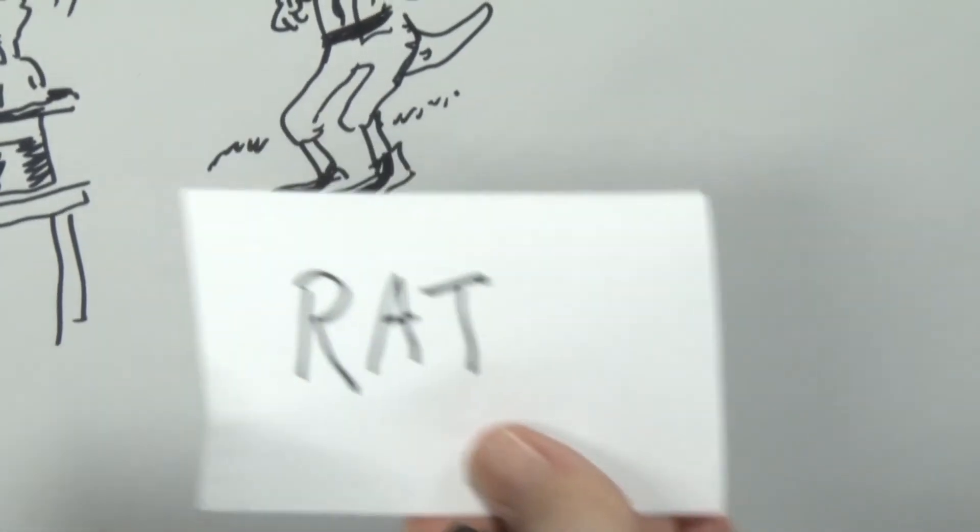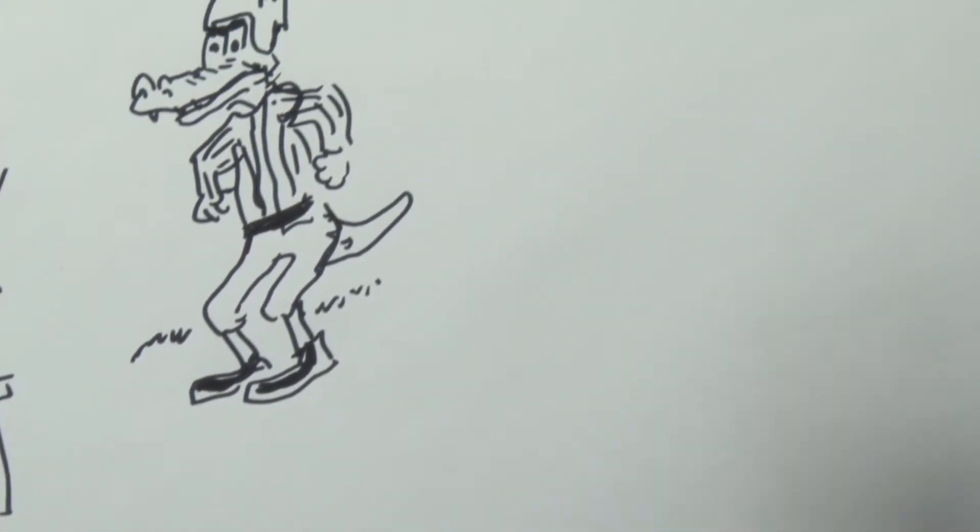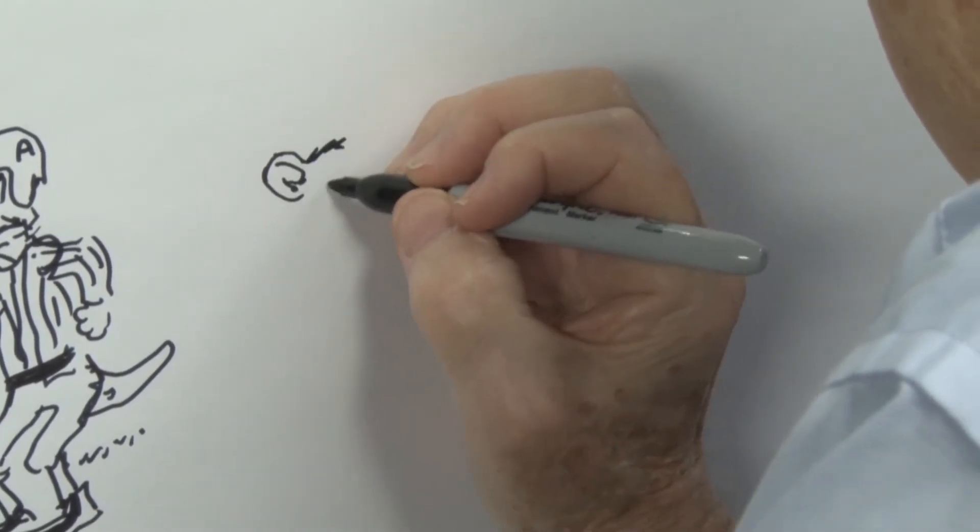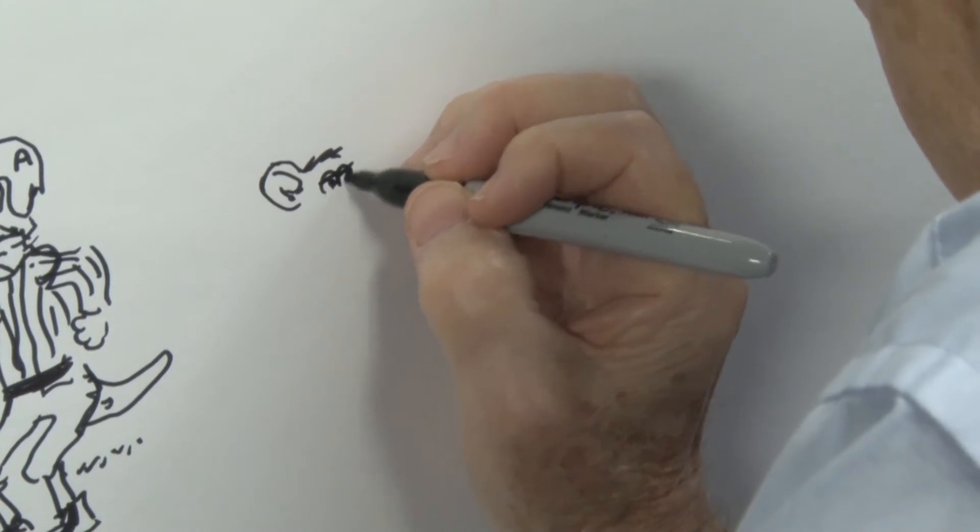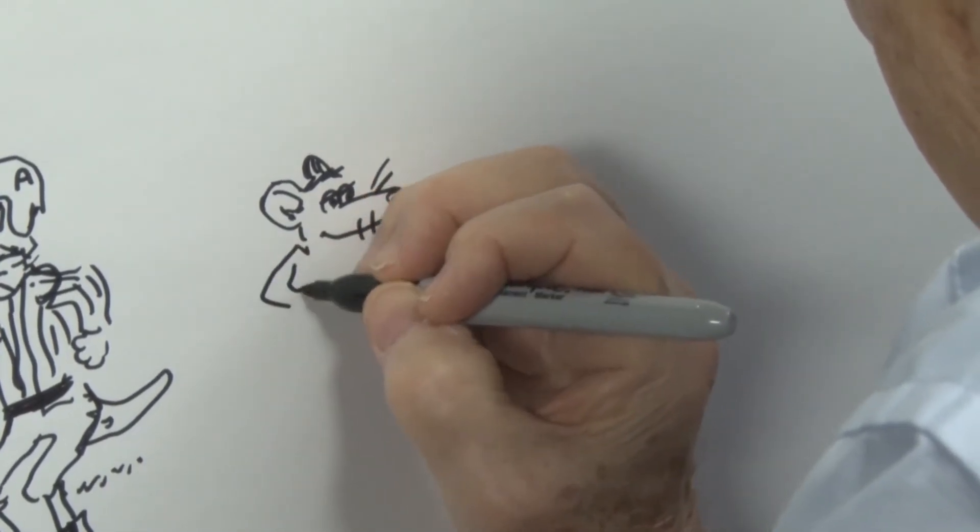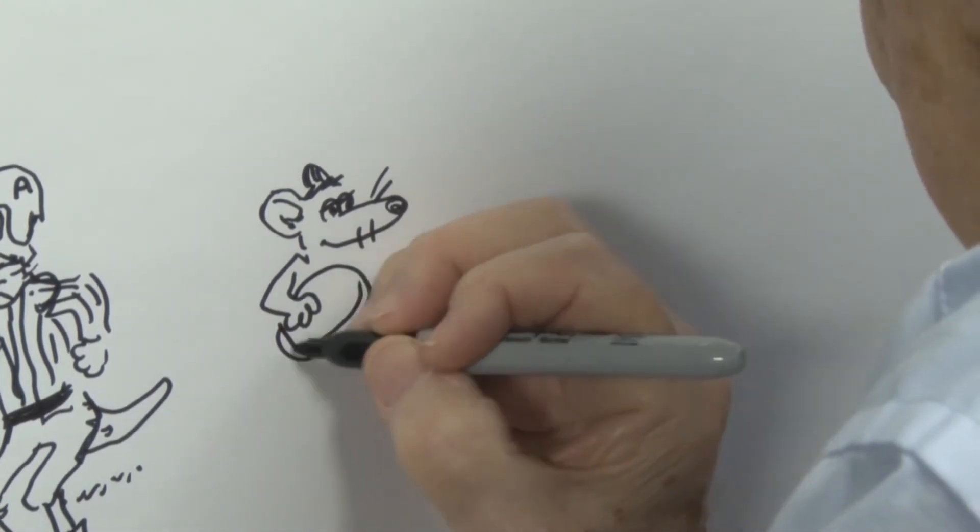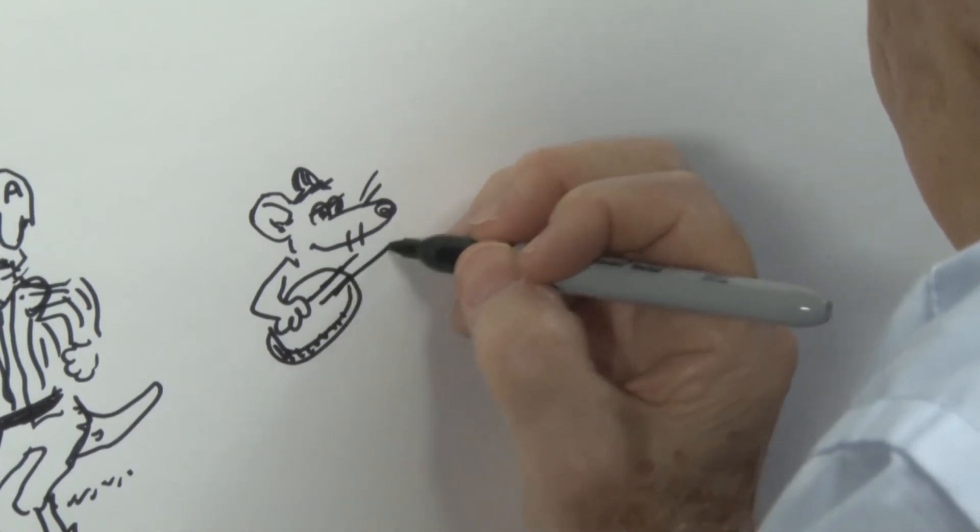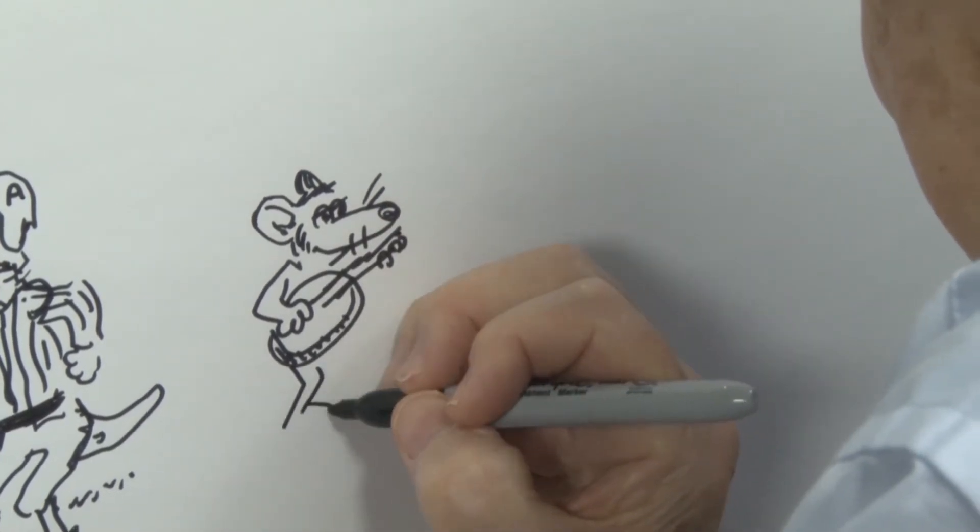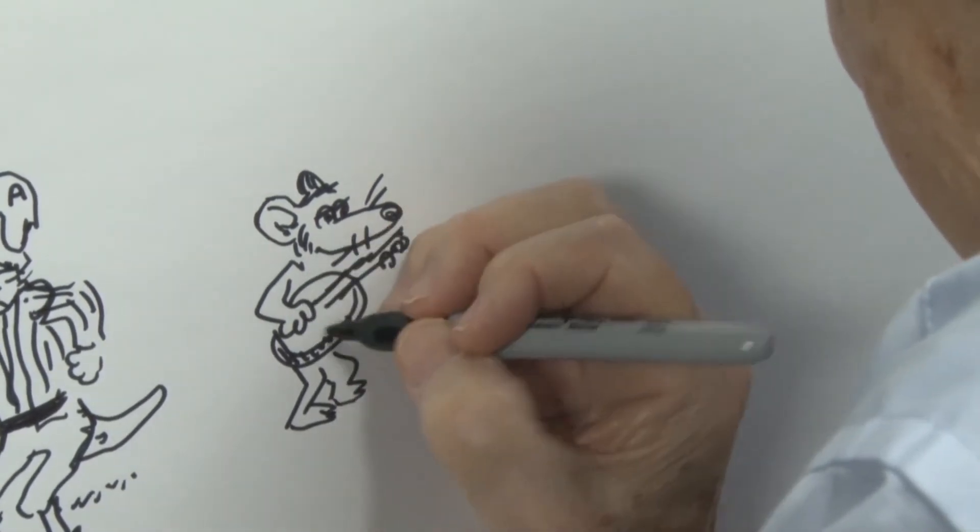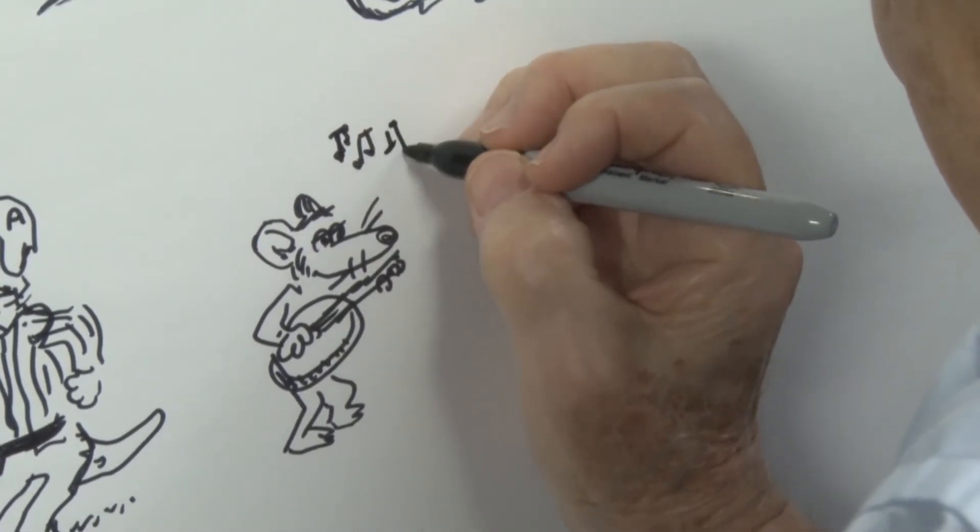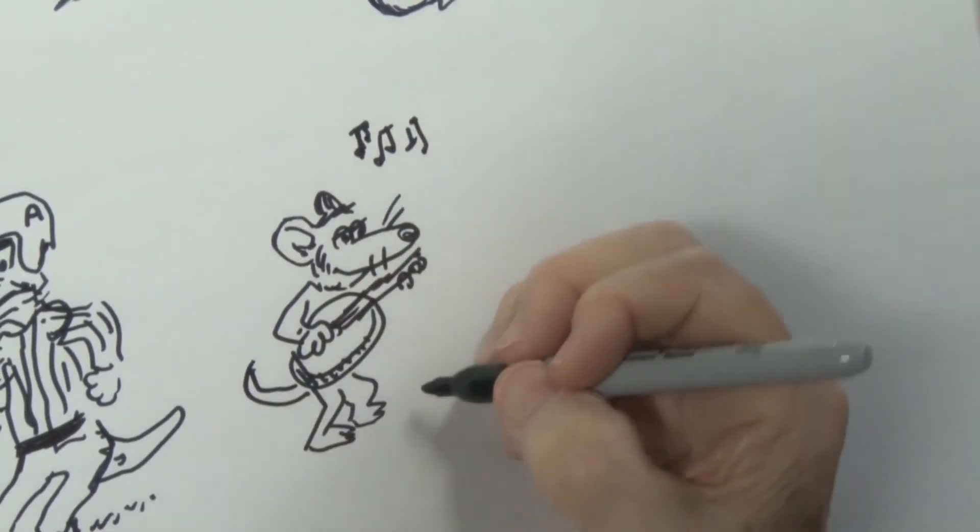And finally, we have a rat who's going to be playing the banjo. A banjo playing rat. Of course, banjos are so large. Well, you have to have a pretty big rat to play one. Anyway, he's getting some music out of the thing.